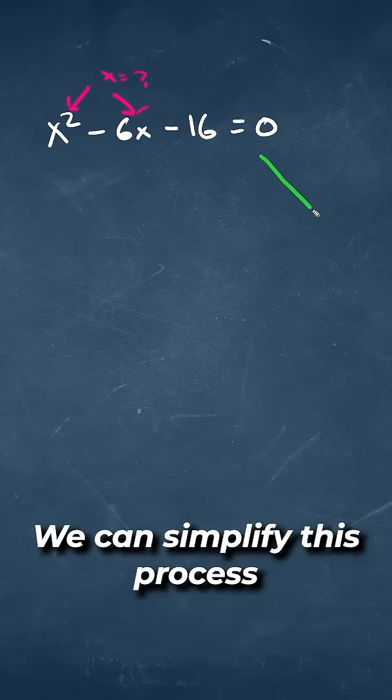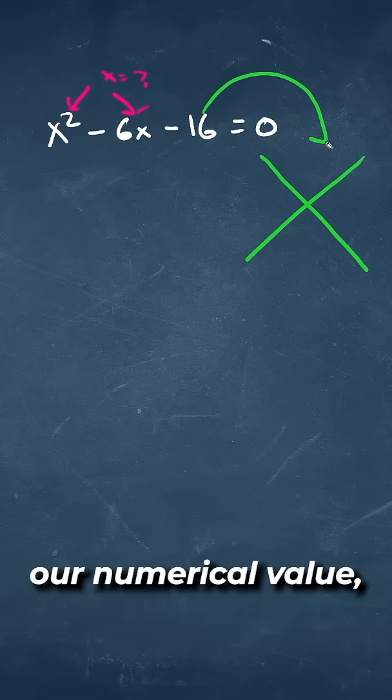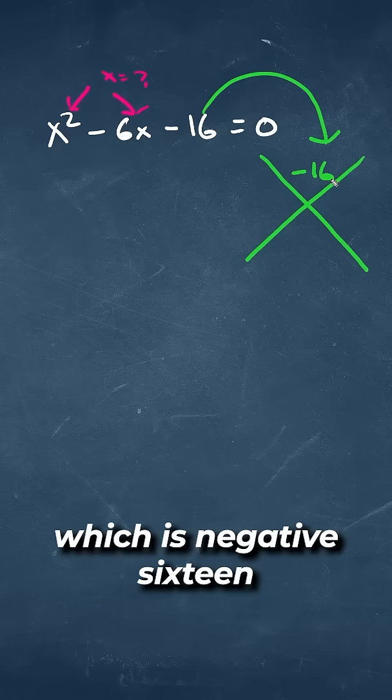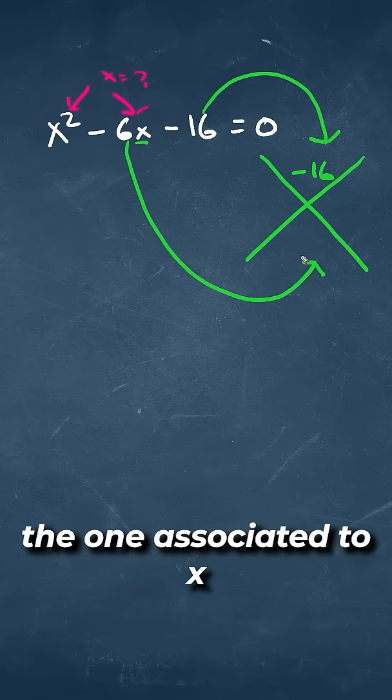We can simplify this process by doing something called the diamond method, where we take our numerical value, the value at the end, which is -16 in this case, and we'll take the middle value, the one associated to x.